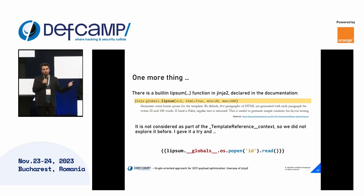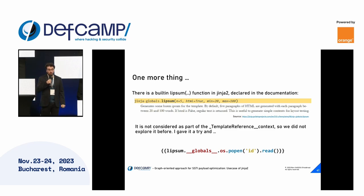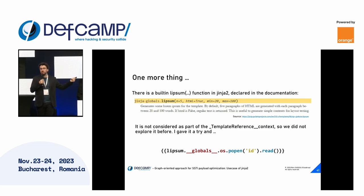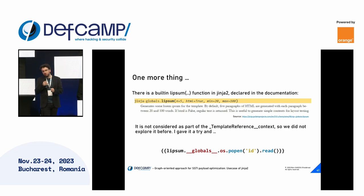Besides the classes declared inside the utils module, we also see inside the template reference context a function called 'lipsum', which is used to generate lorem ipsum. This function is also declared inside the file that uses OS, but since it's a function in Python you don't need __init__ to access __globals__ — you can go there directly. So the path is shorter by one element, removing the __init__ step. This is actually the shortest payload you can ever find for Jinja2 up to this day — it should be the shortest as long as there's no change in the codebase, and it will always be available in non-sandboxed environments.